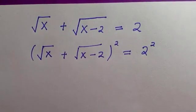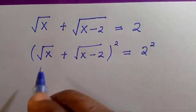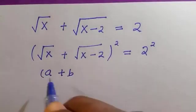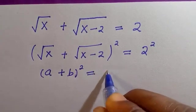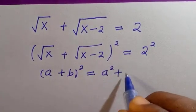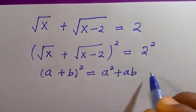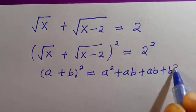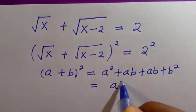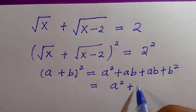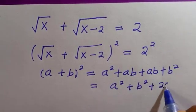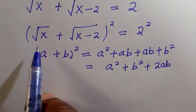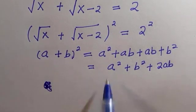The expansion works like this: if I let root x equal letter a, and root x minus 2 equal b, then squaring gives us a squared plus ab plus ab plus b squared — that is, a squared plus 2ab plus b squared.